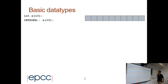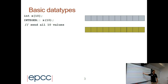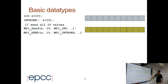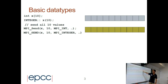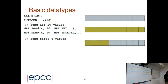For example, here I have a vector of 10 integers. If I want to send all these elements, I should write MPI_Send, where x is the address of the vector. 10 is the number of elements and the type is MPI int.